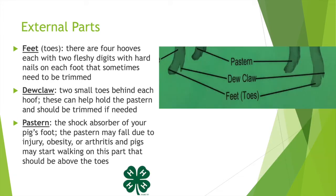Moving on to the feet or toes — these are four hooves each with two fleshy digits. Digits are kind of like fingers with hard nails on each foot that sometimes need to be trimmed. The dewclaw are the two small toes behind each hoof, and these can help hold the pastern and should be trimmed if needed.